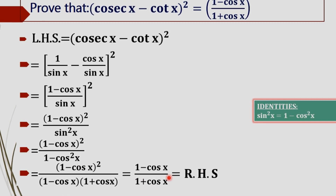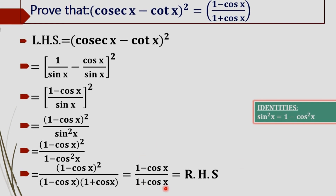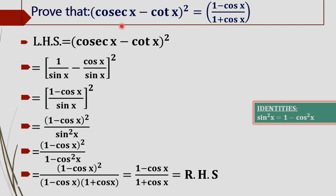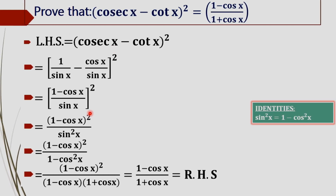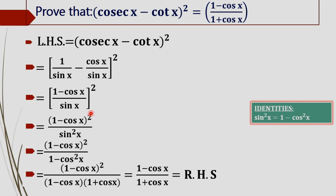This gives us (1 minus cos x) divided by (1 plus cos x), which is the RHS. Hence, we have proved the trigonometric equation. In summary, we first rewrote cosec and cot in terms of sine and cos, and then changed every term into expressions involving cos x to reach the RHS.